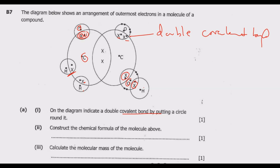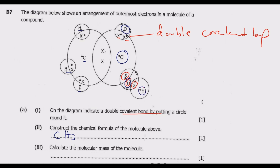Roman numeral 2: construct the chemical formula of the molecule above. If you look at this molecule, you will notice that we have one C bonding with three hydrogens — this C, that one, that one, and this one. So we are going to have one C bonding with three hydrogens. Then we come here and see this carbon bonding with this oxygen and another oxygen.